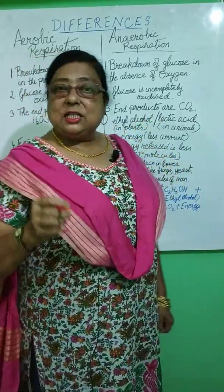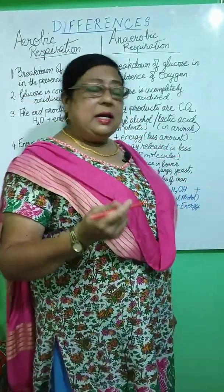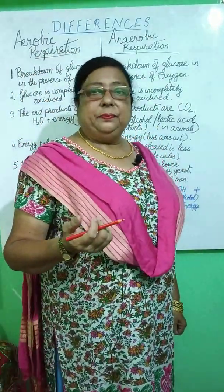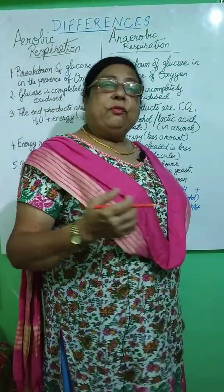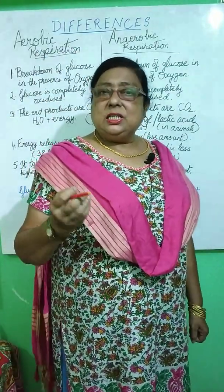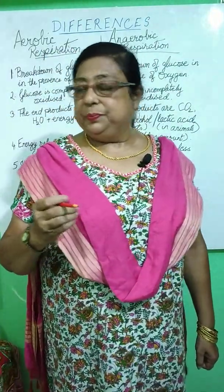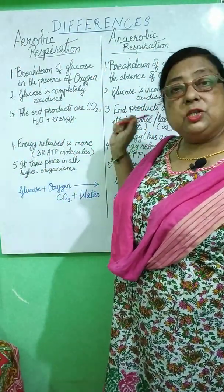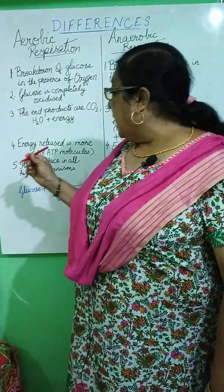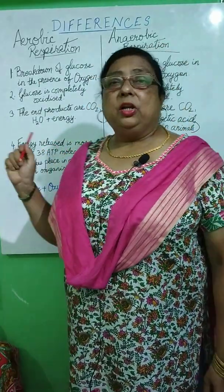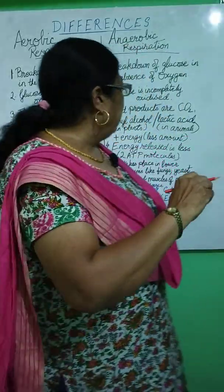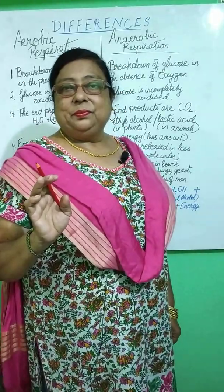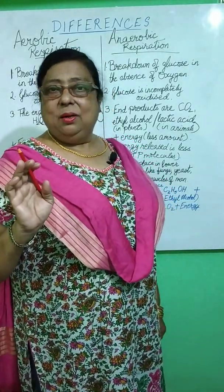The end products of anaerobic respiration are carbon dioxide, ethyl alcohol in the case of plants such as yeast, and lactic acid in the case of animals — plus energy, which is very less in amount. Energy released in aerobic respiration is much more compared to anaerobic respiration — around 38 ATP molecules. In anaerobic respiration, energy released is very less — just 2 ATP molecules.